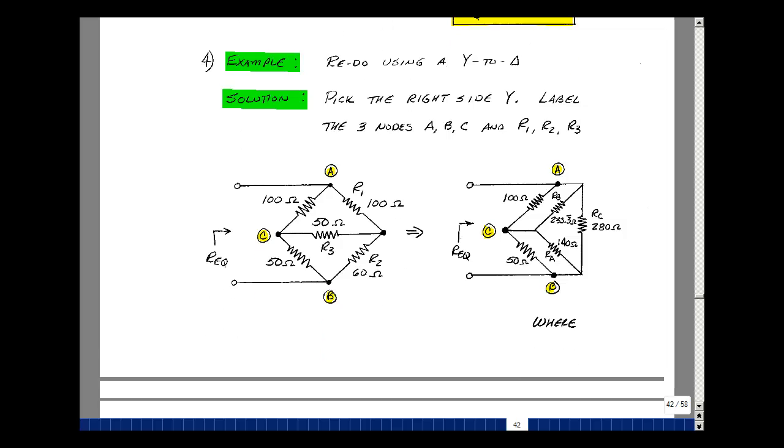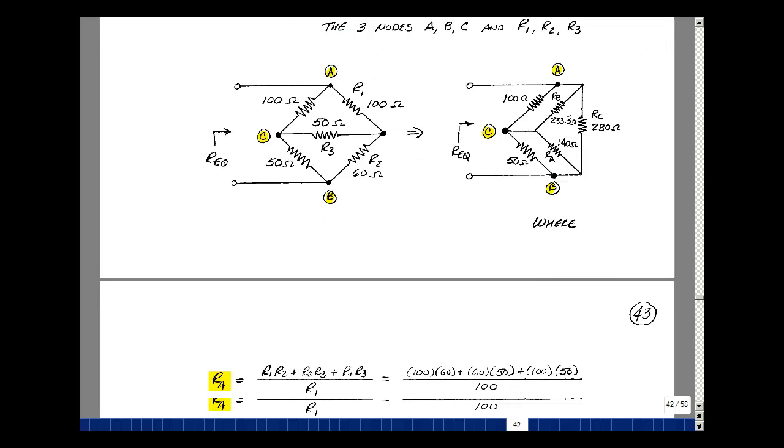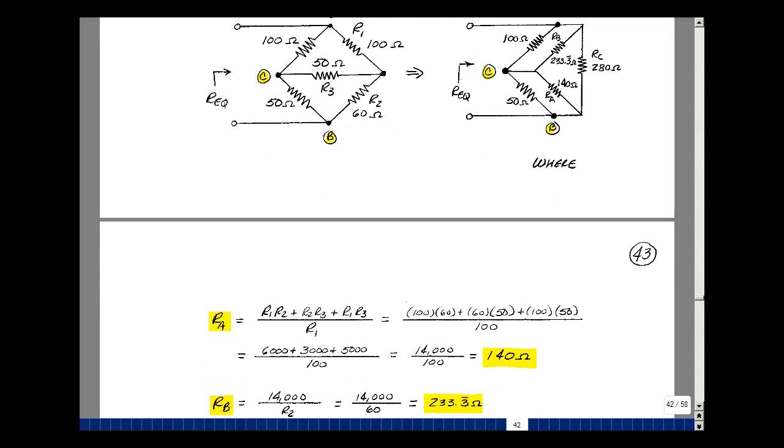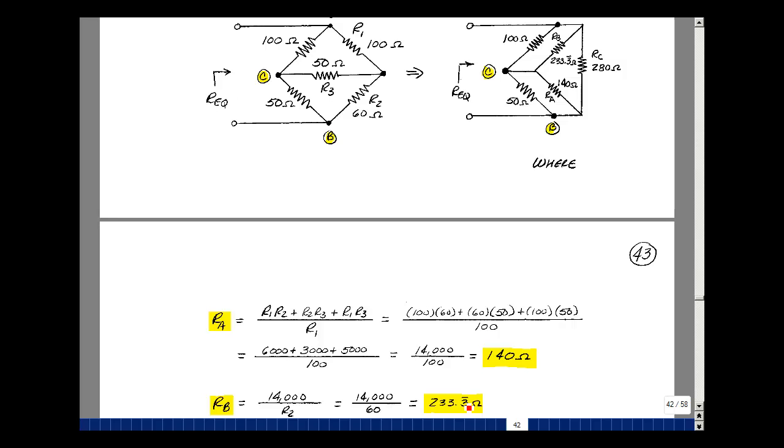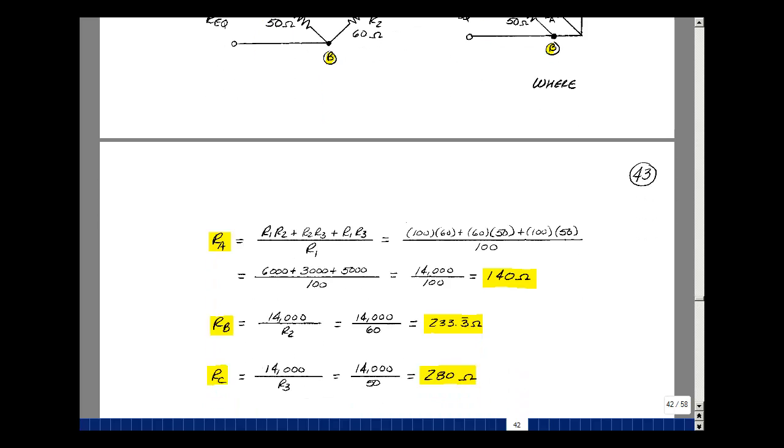And again, I've calculated the resistor values using our formulas where we take the products in the Y two at a time. So 1 times 2, 2 times 3, 1 times 3. R sub A is divided by R1, R sub B by R2, and R sub C by R3. Get 140, 233.33, and for that, 280 for R sub C.